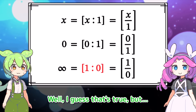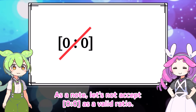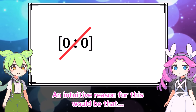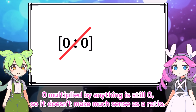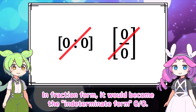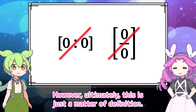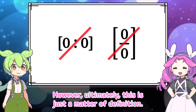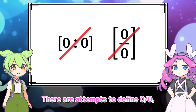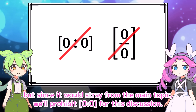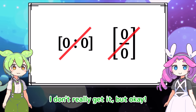As a note, let's not accept 0 to 0 as a valid ratio. An intuitive reason is that 0 multiplied by anything is still 0, so it doesn't make much sense as a ratio. In fraction form it becomes the indeterminate form 0 over 0. Ultimately this is just a matter of definition — there are attempts to define 0 over 0, but since it would stray from the main topic, we'll prohibit 0 to 0 for this discussion.